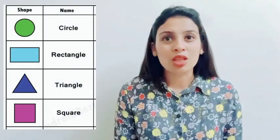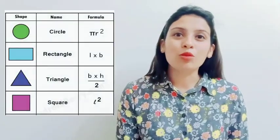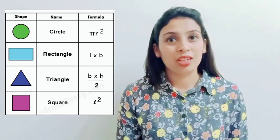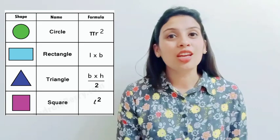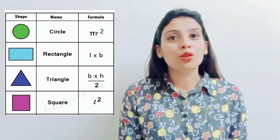Area of regular shapes — like square, rectangle, triangle, and circle — can be calculated using their specific formulas. There is no such specific formula for irregular objects. Area of a square is side × side. Area of a rectangle is length × breadth. Area of a triangle is half × base × height, and area of a circle is π × radius squared. We simply put the values into the formula and multiply to get the area.